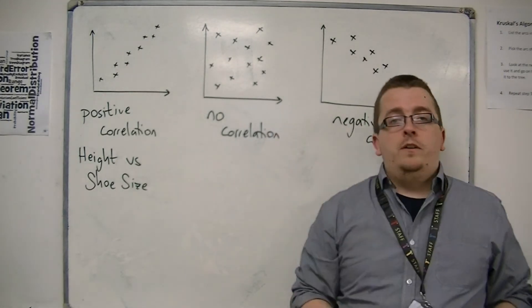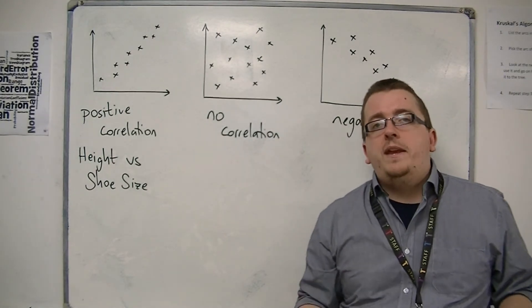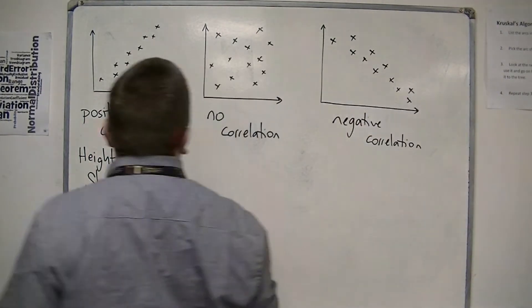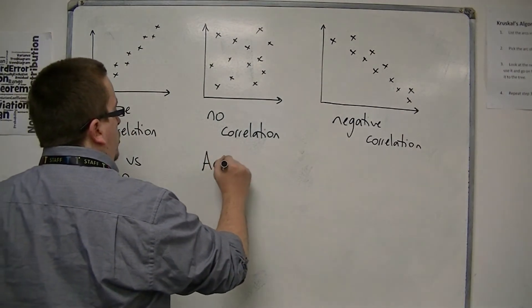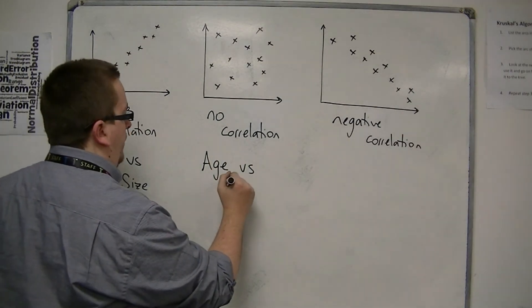For no correlation, an example of that might be, for example, someone's age against their house number.